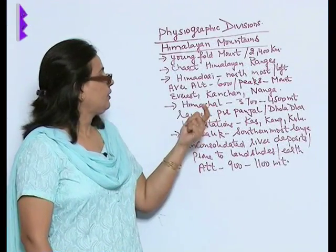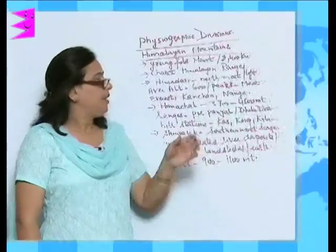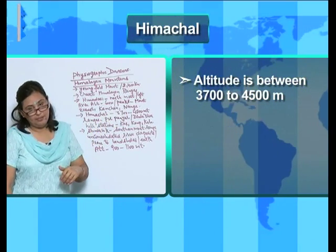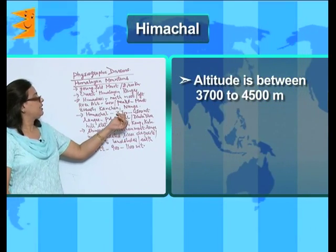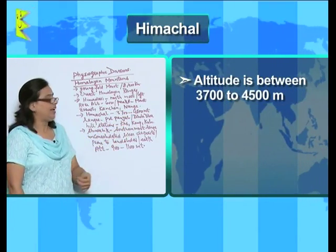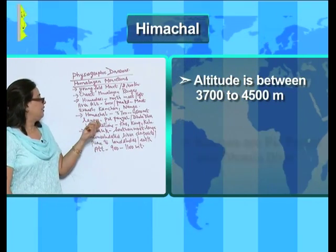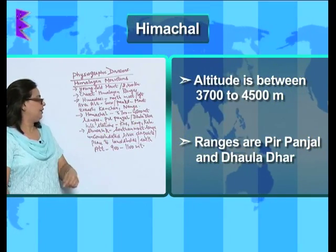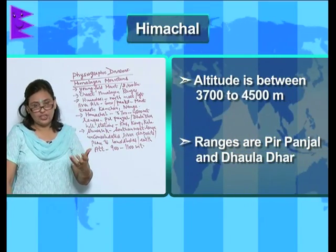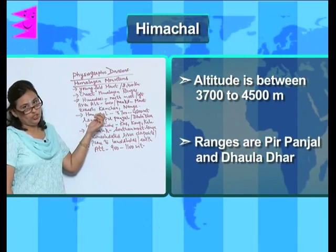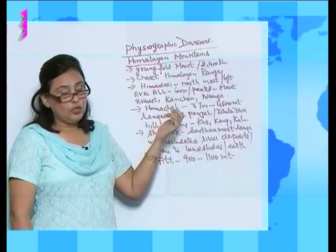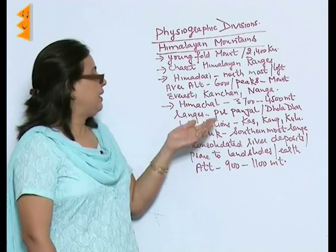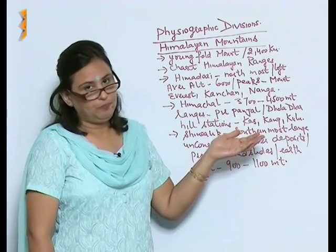Next is the Himachal range. The altitude here is anything between 3700 to 4500 meters, and the ranges here are the Pir Panjal and the Dholadhar. Most of the hill stations are located in the Himachal range — when we talk about Kullu, Kangra, or Kashmir, all of them lie in the Himachal range.